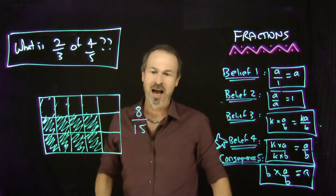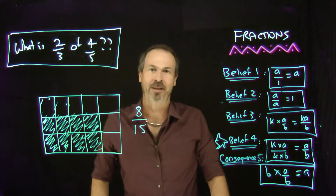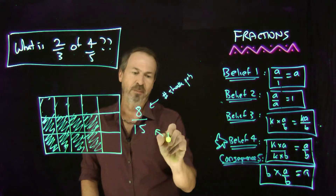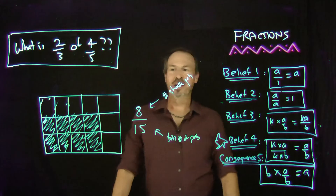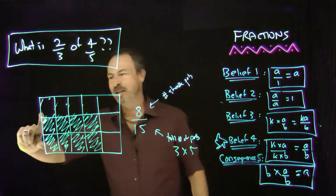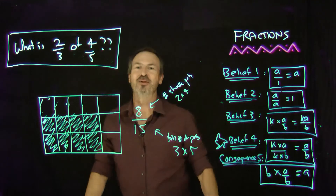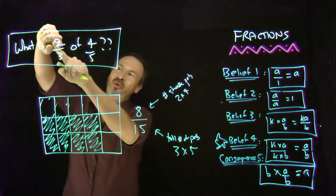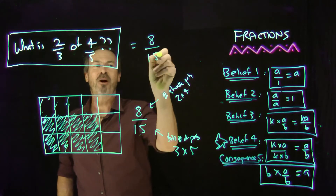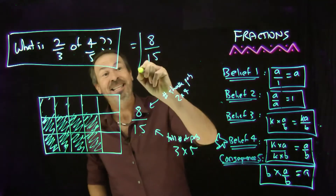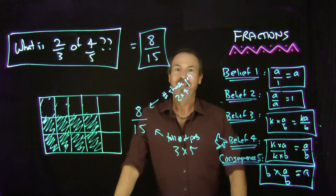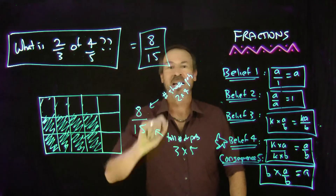So what's two-thirds of four-fifths of a pie? It's eight-fifteenths of a pie. Here's the amazing coincidence: the total number of parts was three times five — fifteen — and the shaded parts was two times four — eight. It looks as though I just took the numerators and multiplied them: two times four is eight. The denominators multiplied: three times five is fifteen. The answer is numerators multiplied together over denominators multiplied together — which is exactly what we just derived for multiplying fractions.